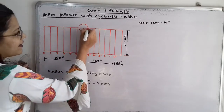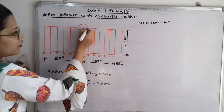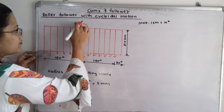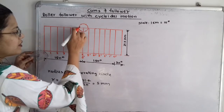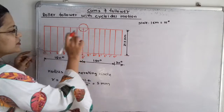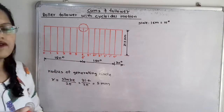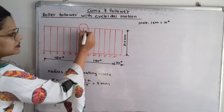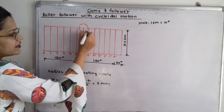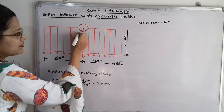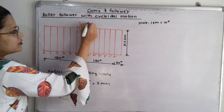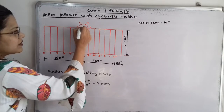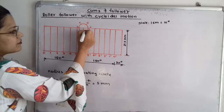We start the angle from the horizontal line. Each angle step is 60 degrees, so we get 60, 120, 180, and continuing to complete 6 equal parts. We number the points on the circle: 1, 2, 3, 4, 5, and 6.